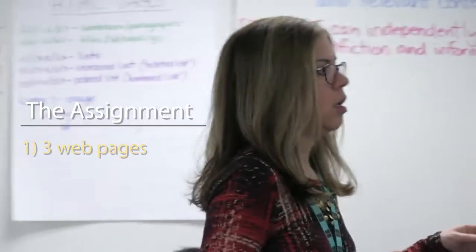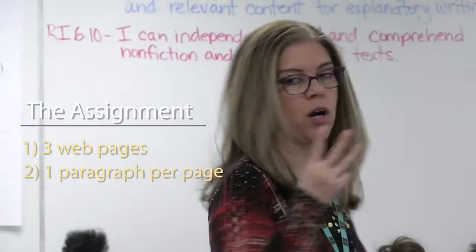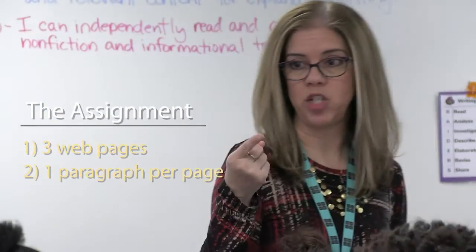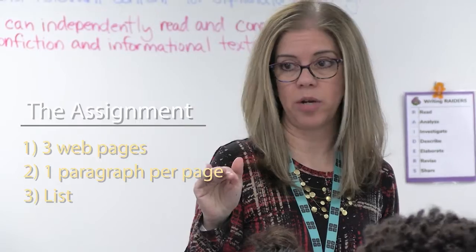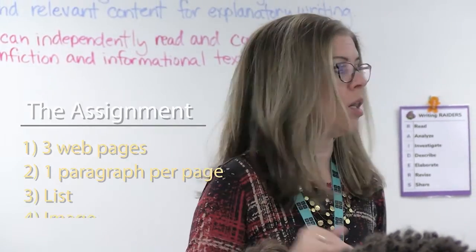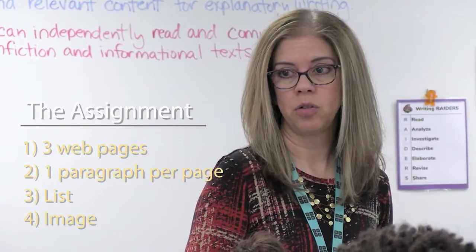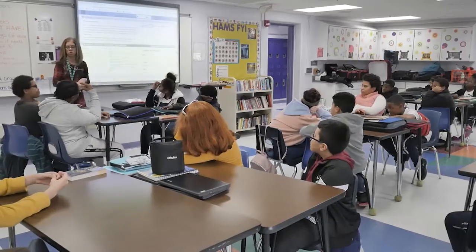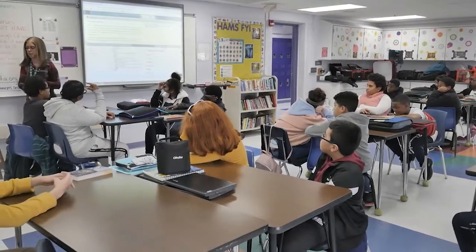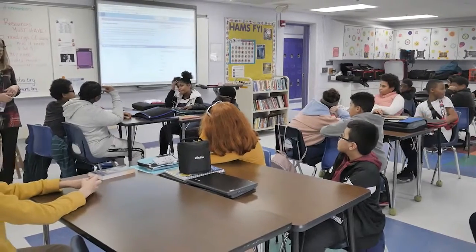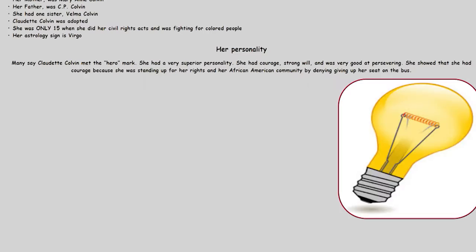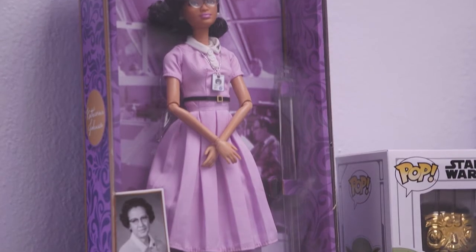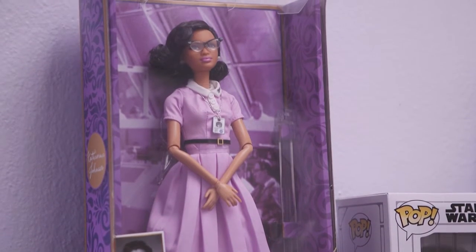You should have three webpages, one paragraph on each page, a list on one of the pages — I don't care where — and an image on the main page. In Renee Coley's Hidden Figures Project, students are telling the stories of lesser-known African Americans who impacted history.